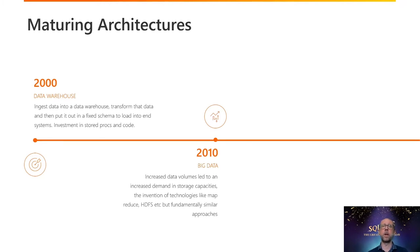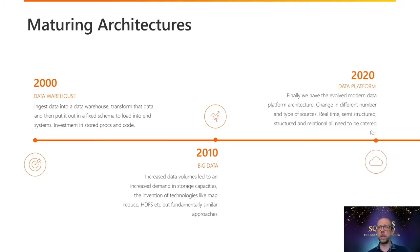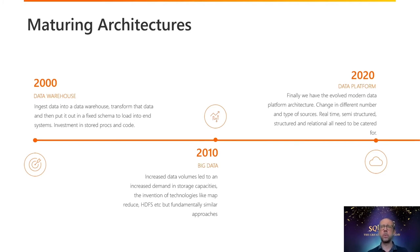We started to see more variety of data come in, and moving forward to now we have the modern data platform — an evolved architecture. That evolution is driven by an increased number and variety of source types: real-time data from IoT devices and mobile devices, semi-structured and structured data from APIs and streaming services, and all of our standard structured relational data. We need to deliver an architecture that can accommodate all of that.